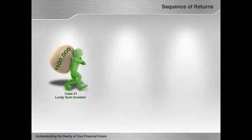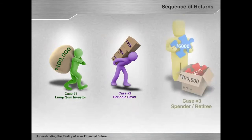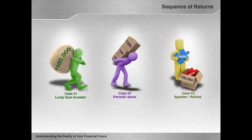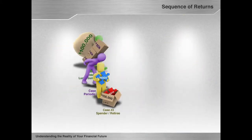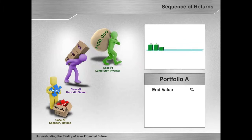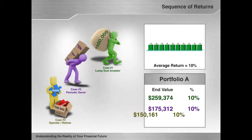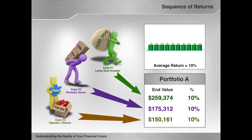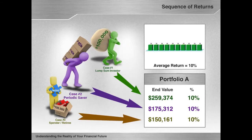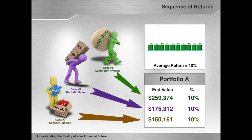Now let's combine our investors — the lump-sum investor, periodic saver, and spender — with the portfolios we just saw and look at the results. Portfolio A achieved 10% each year, so for Cases 1, 2, and 3, these are your ending balances, and you see the compounded rate of return indicated next to the ending balance. For all three cases with Portfolio A, the compounded rate of return was 10%.